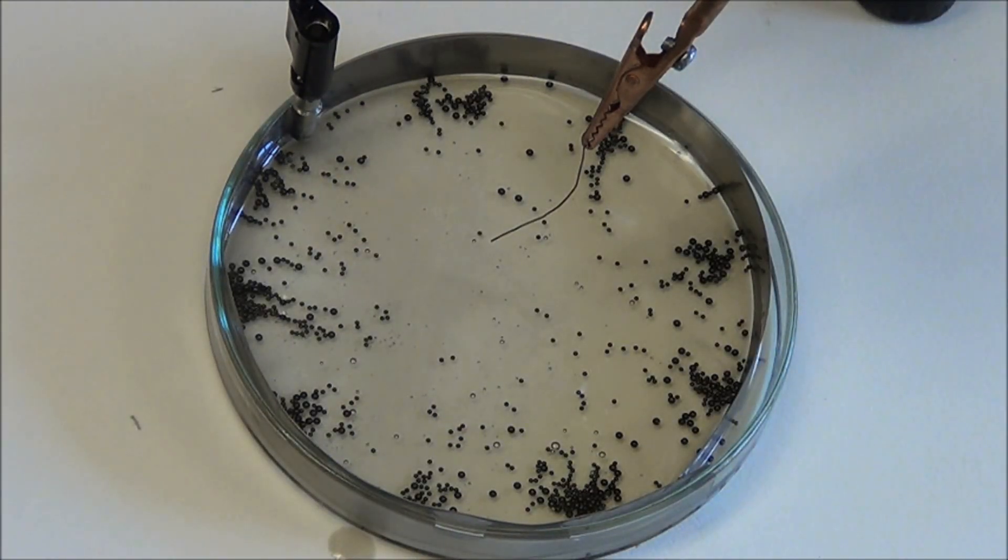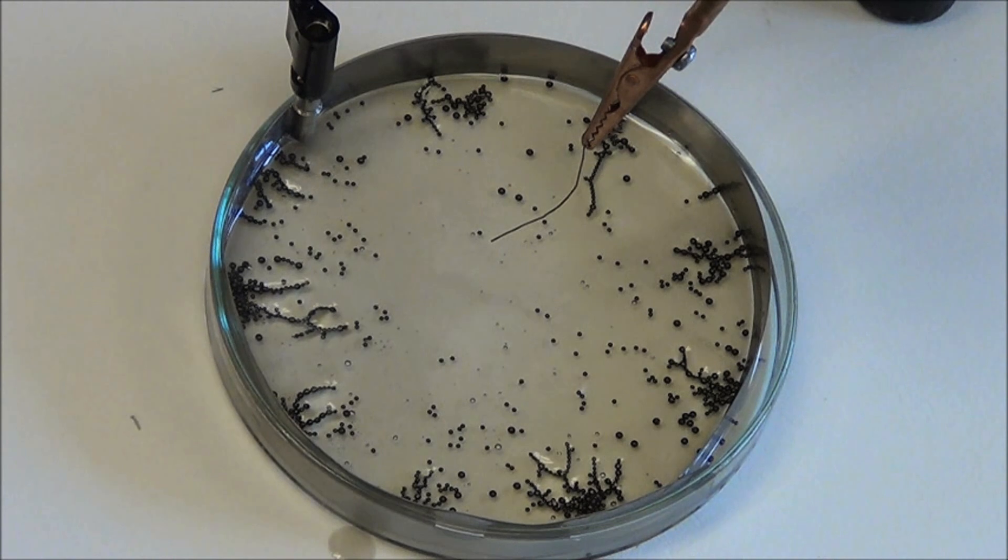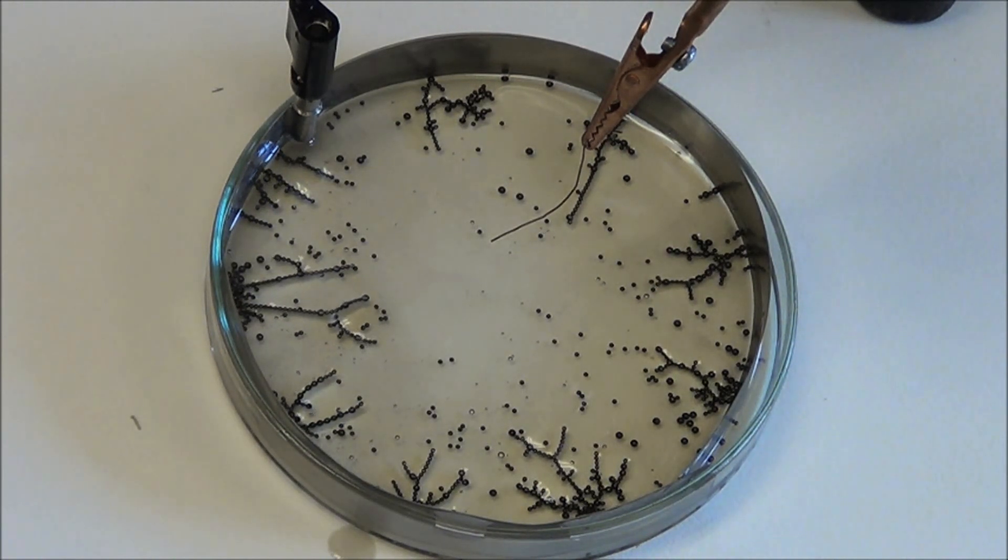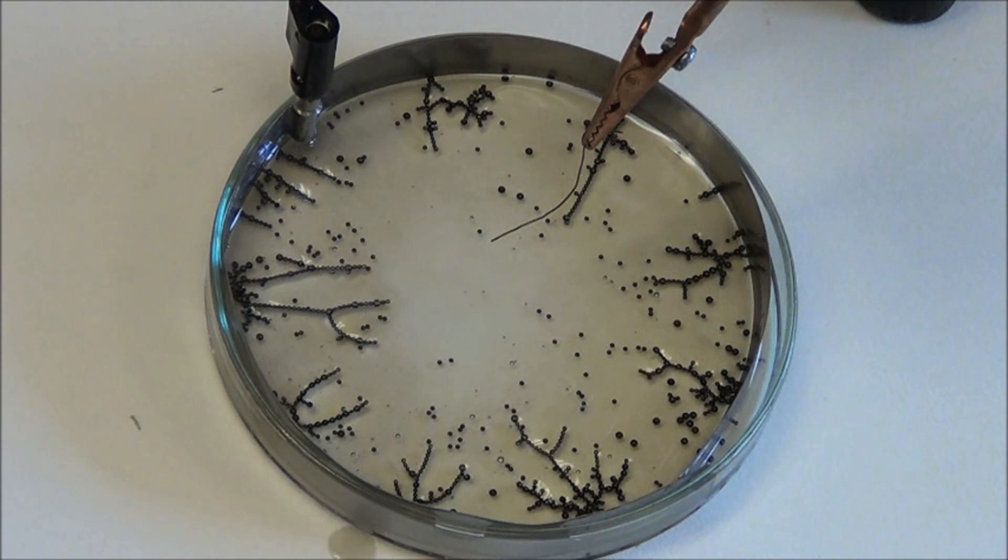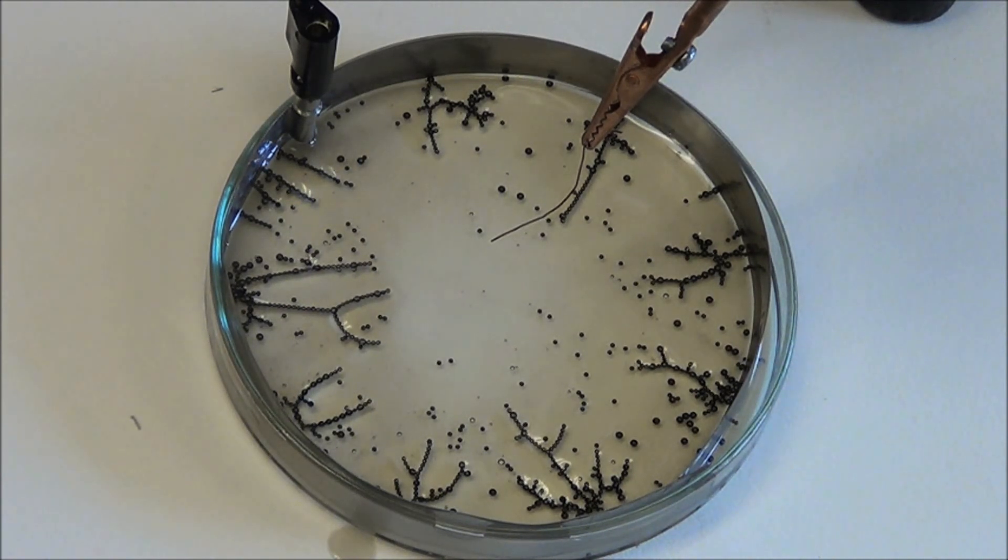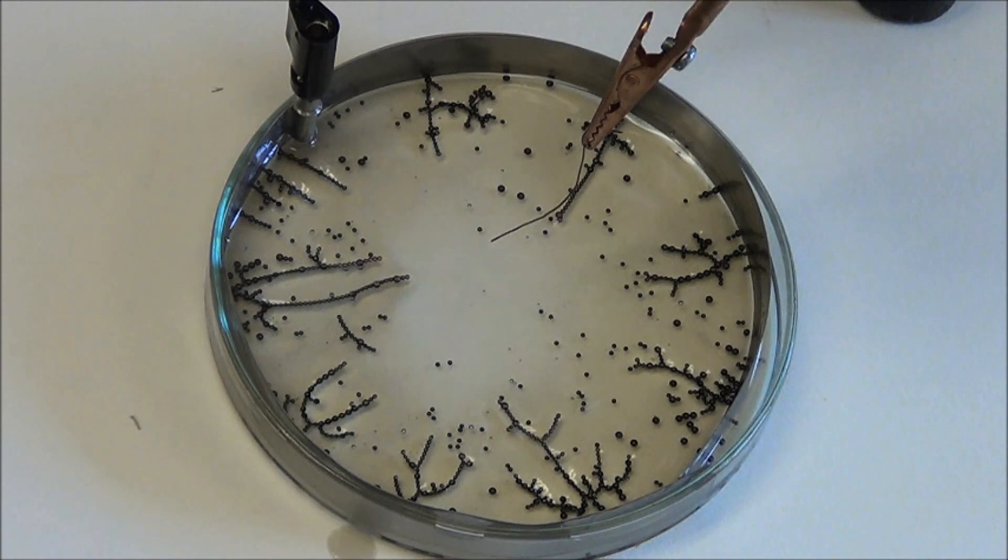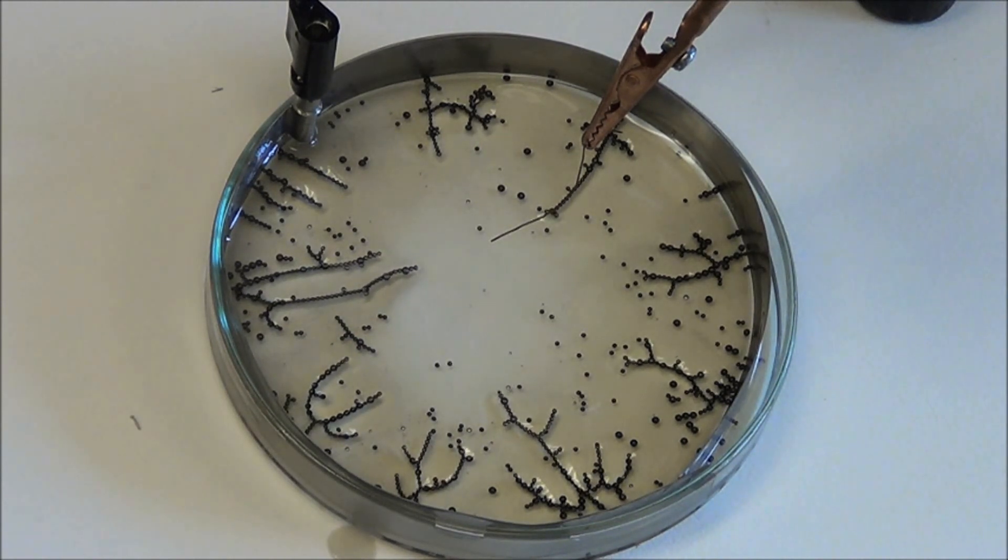We can start the experiment over, but instead of starting all the balls in the middle, we can group them towards the sides in clumps. What will happen this time? Here, we see many stems form and compete with each other for balls. They sway back and forth, picking up new recruits, and sometimes battle with their neighbors.